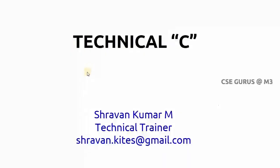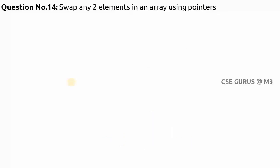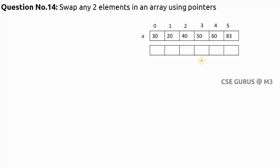Welcome to the video lectures on Technical C by Sravan Kumar Mantri. Coming to question number 14: swap any two elements in an array using pointers. Let's take an array with six elements. Suppose we want to swap element a[1] and a[4], where a[1] is 20 and a[4] is 16.